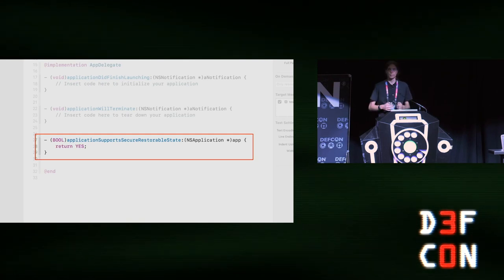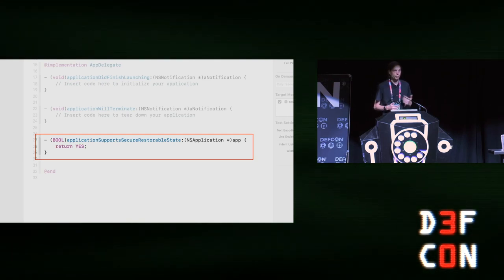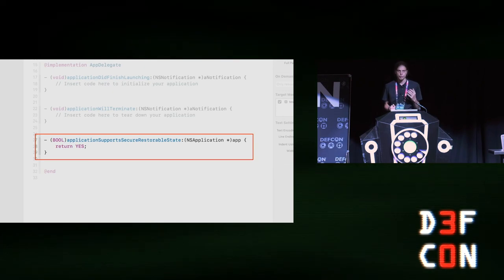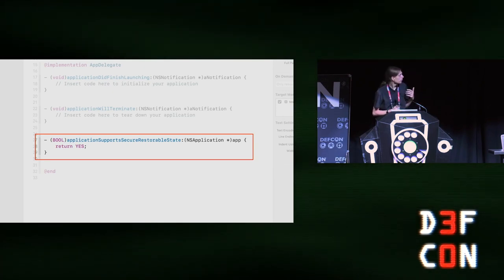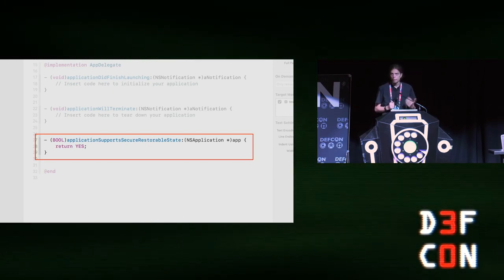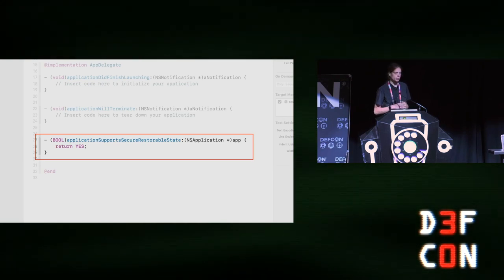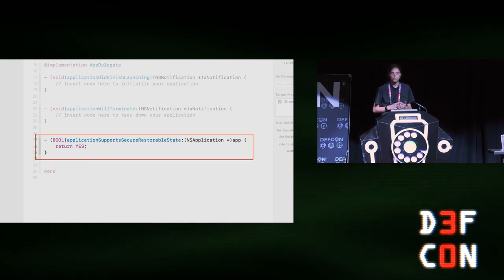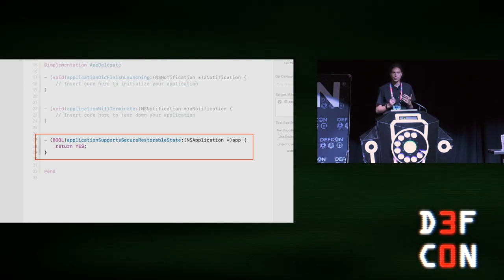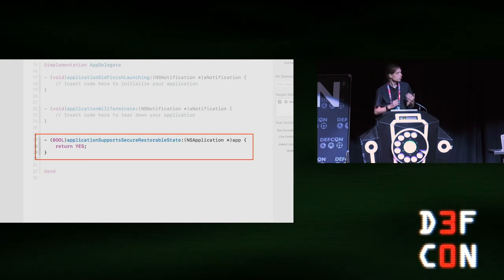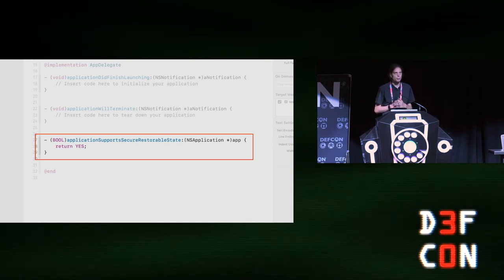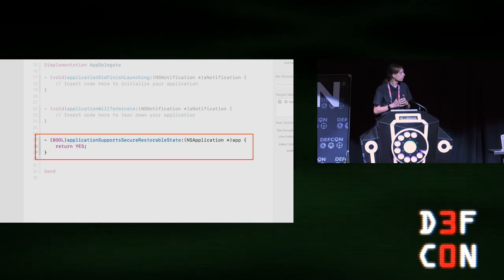If you are a macOS developer and you've updated to Xcode 13 and created a new project, you may have noticed there's a new method in the application delegate — application supports secure restorable state — which by default returns yes. In this talk, I'm going to describe the vulnerability that necessitated this change and show how it could be applied for three different types of attacks.